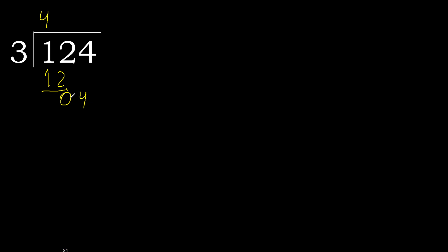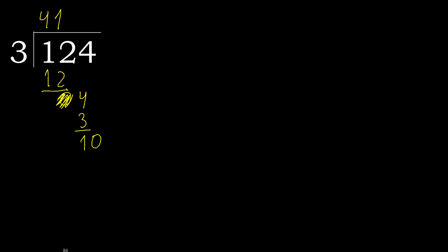Next: bring down 4. 3 multiplied by 2 is 6 — 6 is greater. 3 multiplied by 1 is 3 — 3 is not greater. Subtract. Next digit: that is not a whole number, therefore complete — always complete with 0.